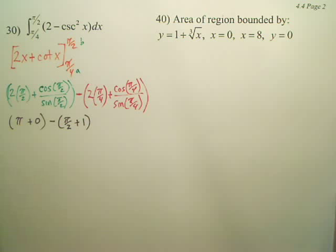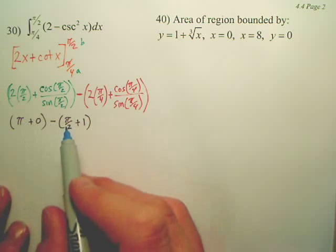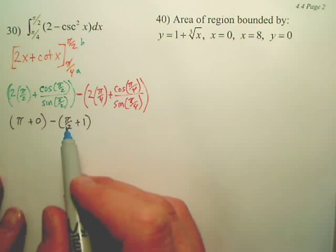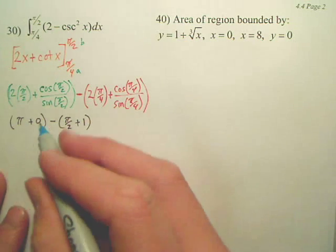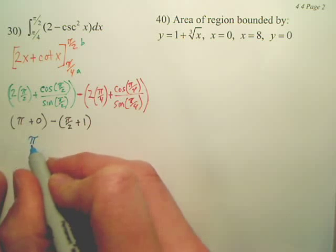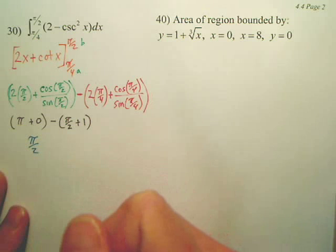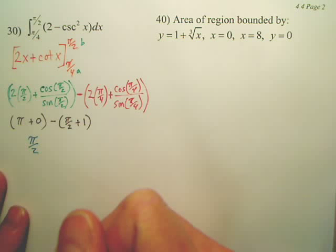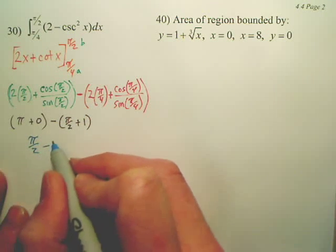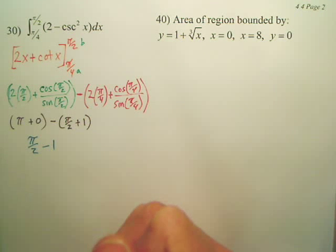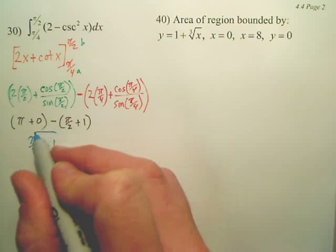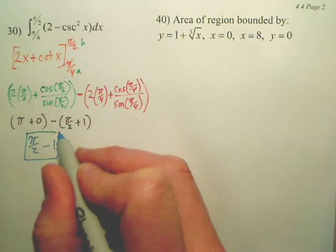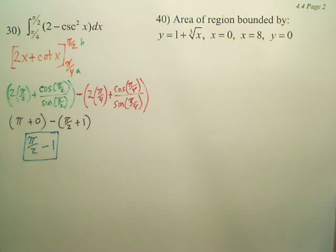So my answer — what is pi minus pi over 2? Just pi over 2, minus 1. That's good enough. We don't have a calculator.